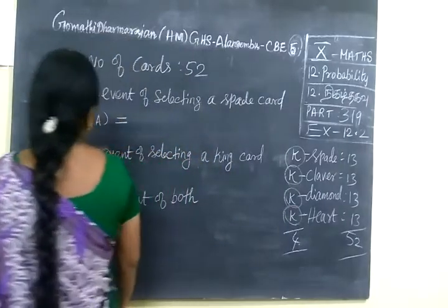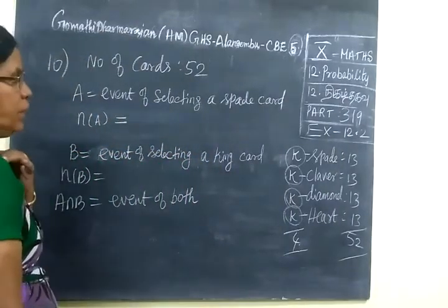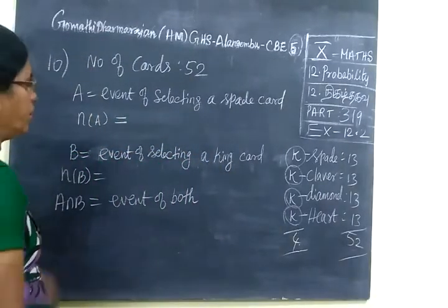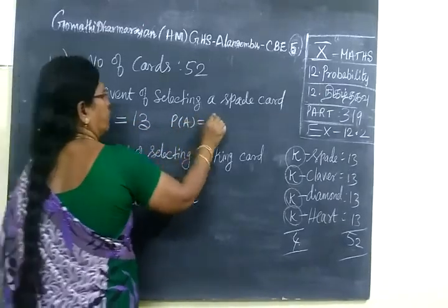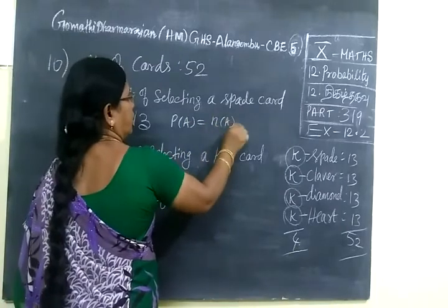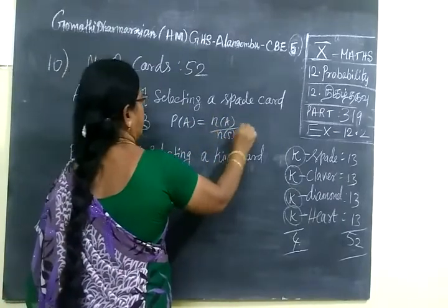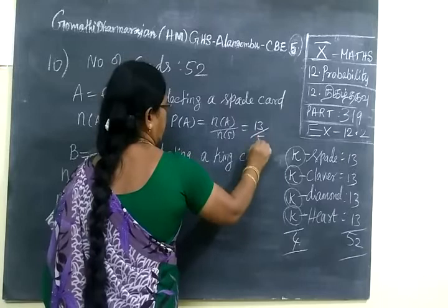So first one it is asked: Event of selecting a Spade. Spade card was totally 13. Therefore, P of A equal to N of A by N of S. Equal to 13 by 52.